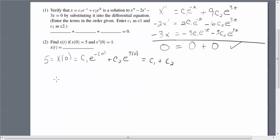So c₁ + c₂ = 5. On the other hand, we have x'(0). Now x' is, remember, -c₁ + 3c₂ because it's x prime, right? We took the derivative, the 3 dropped down and the -1 dropped down. And since e^0 is simply 1, we have -c₁ + 3c₂ = 1.